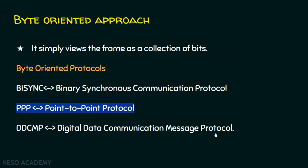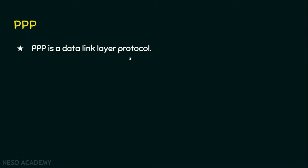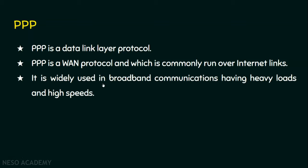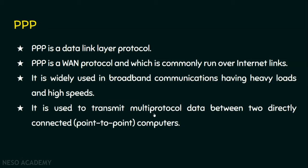Point-to-Point Protocol is a data link layer protocol, and more precisely, it is a wide area network protocol. PPP is a WAN protocol commonly run over internet links — that is, between two routers. PPP has two main usages: it is widely used in broadband communications with heavy loads and high speeds, and it is also used to transmit multi-protocol data between two directly connected point-to-point devices, such as between two routers. It is not a simple LAN protocol like Ethernet; PPP is a WAN protocol.